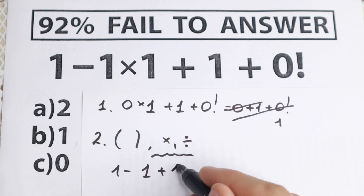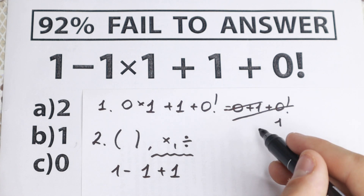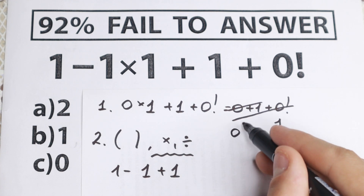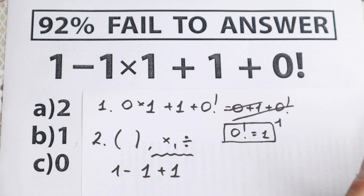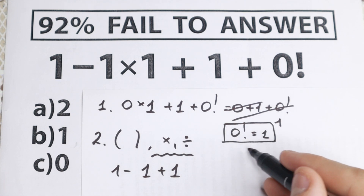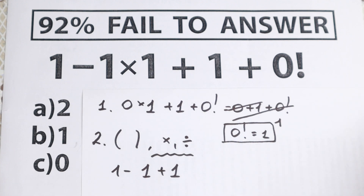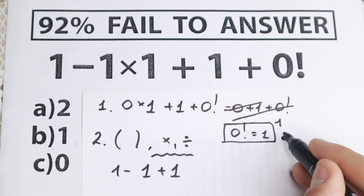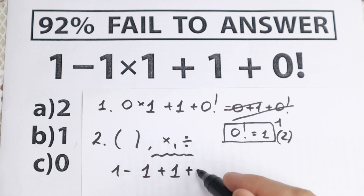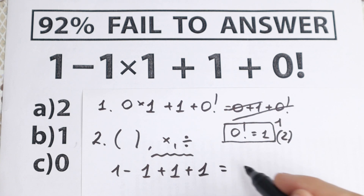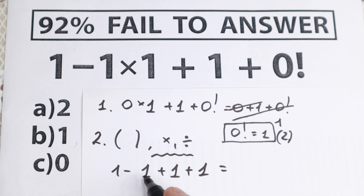So we have 1 minus 1 times 1 — the multiplication gives us 1. Plus 1, and right now 0 factorial equals 1. You need to know this because some students say 0 factorial equals 0, which is the second common mistake. So 0 factorial equals 1, and we still have 0 factorial giving us plus 1.